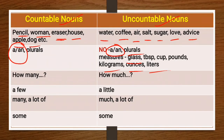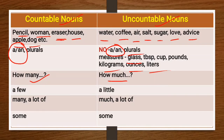Another thing to know is that we use the expression 'how many' with countable nouns to ask questions, and 'how much' for uncountable nouns. For example, we say 'how many pens do you have?' — we cannot say 'how much pens.' Similarly, we use 'how much milk is there in the jug?'